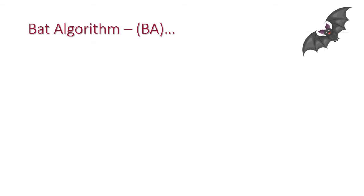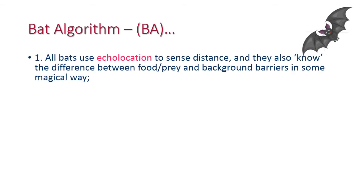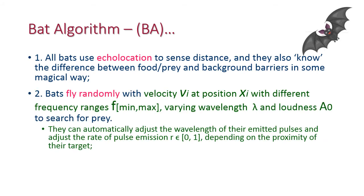With this information, we should follow three rules to design bat algorithm. The first rule: all bats use echolocation to sense distance, and they also know the difference between various objects in some magical way. The second rule: bats fly randomly with velocity, position, and different frequency ranges from frequency minimum to maximum, and varying wavelength and loudness to search for prey.